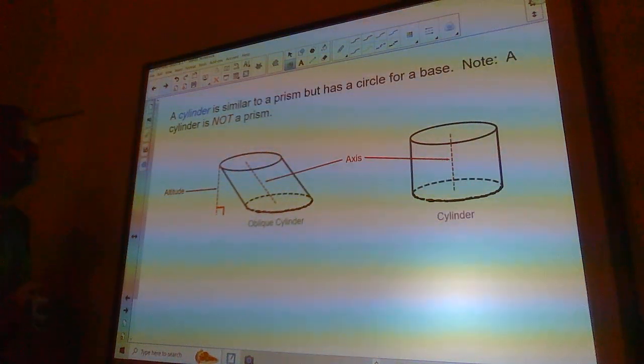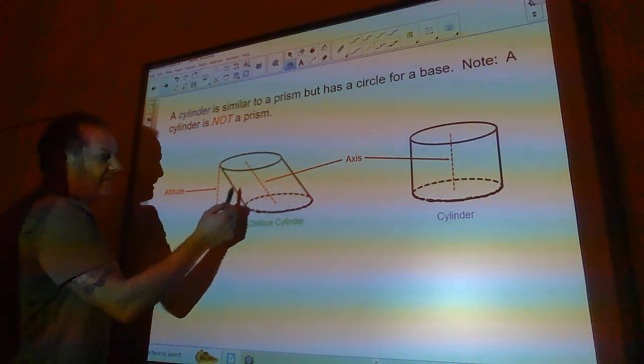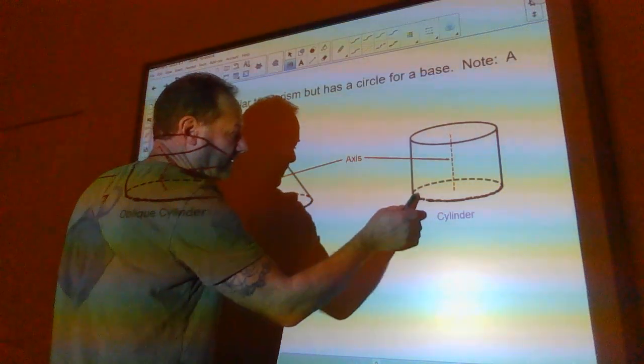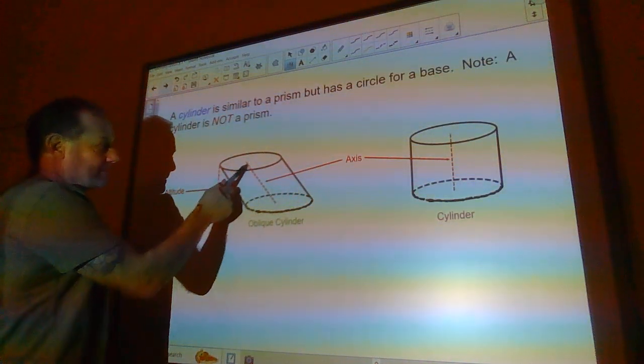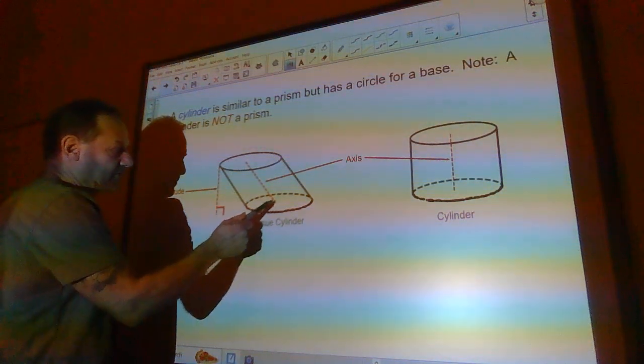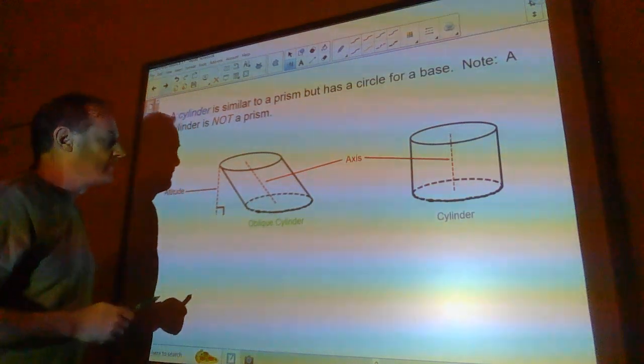A cylinder is similar to a prism, but it has a circle for a base. So it is not a prism. And this is an oblique cylinder because leaning to one side. This is a regular old cylinder or a right cylinder. A cylinder has an axis that goes from the center of one circle to the center of the other circle. Same here.